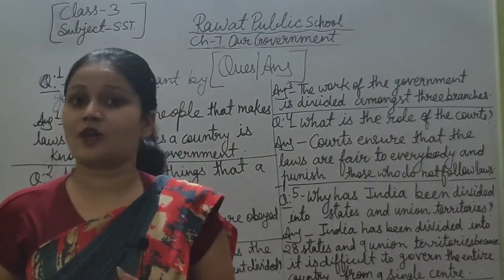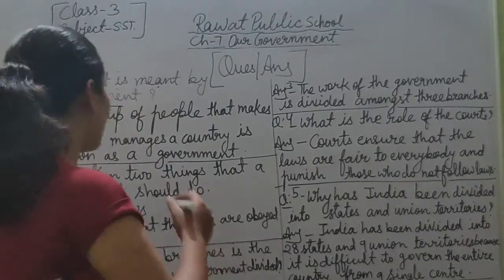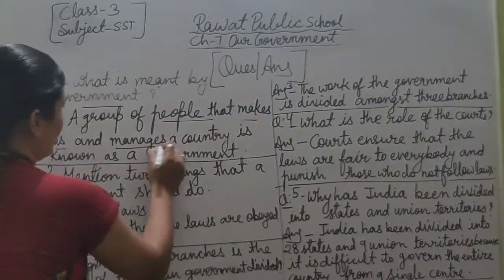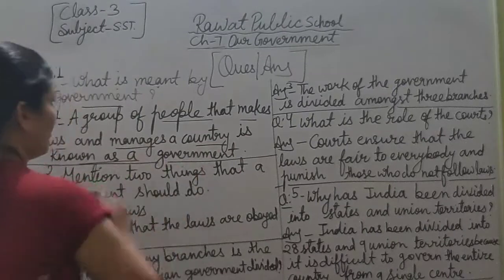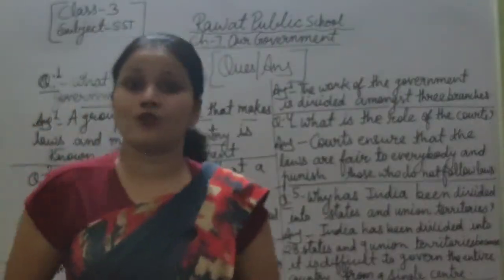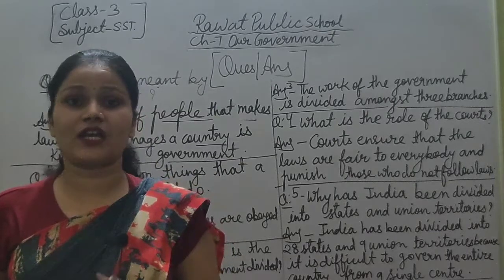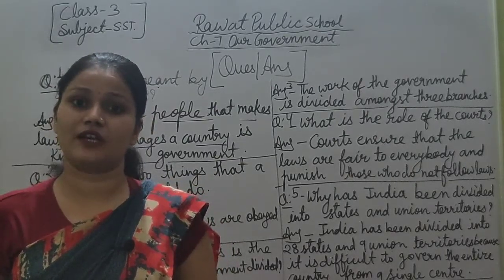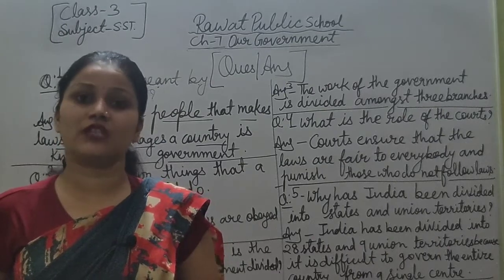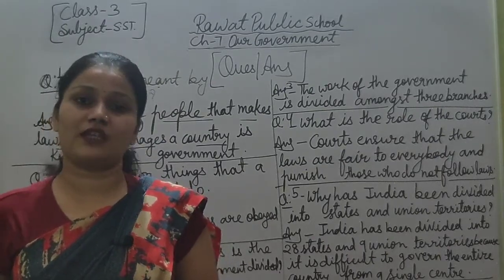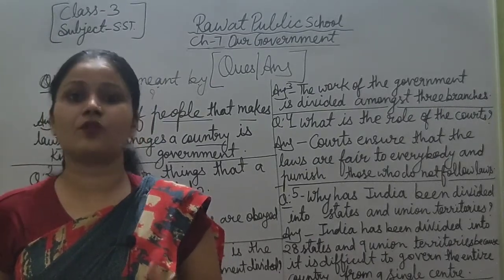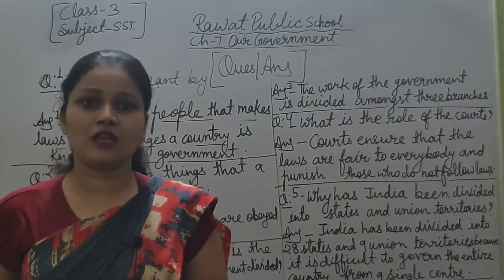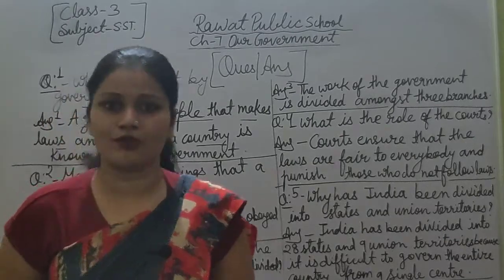What is the definition of government? Answer: a group of people that make laws and manage a country is known as government.